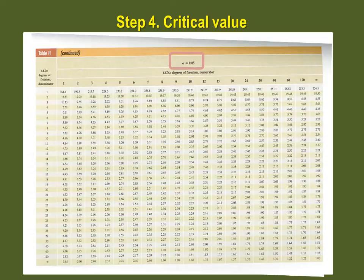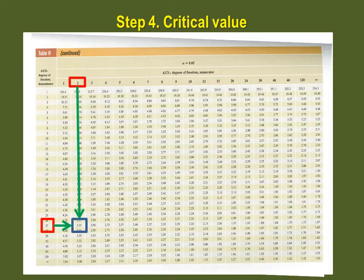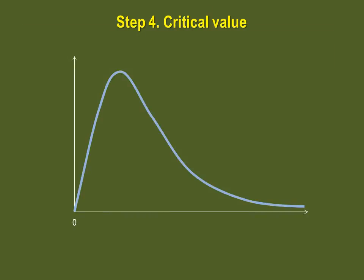Our degree of freedom for the numerator is 2. Our degree of freedom for the denominator is 27. So our critical value is 3.35. To sketch this, make sure you draw the shape of the F distribution, which is skewed positively, and indicate not only the area of rejection, but also the critical value.